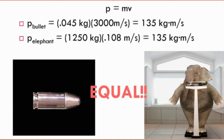Using the formula p equals mv: the momentum of the bullet is 0.045 × 3,000 = 135 kg·m/s. The elephant's momentum is 1,250 × 0.108 = 135 kg·m/s as well. The momentum of these two objects is equal — which shows that you should always calculate rather than assume.